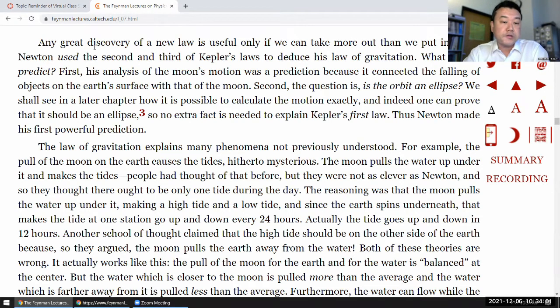And the way we judge scientific theories and laws is that if that's all you did, then it's not useful. Because all it has done is basically explain the things that exist, things that you already knew. So perhaps you gave some rationale for something that didn't have rationale. But how do you know your rationale reasoning is right? So this is Feynman demonstrating how Newton's discovery of the universal gravitation is useful in this way he described. Now, Newton used the second and third of Kepler's laws to deduce his law of gravitation. What did he predict? First, his analysis of the moon's motion was a prediction because it connected the falling of objects on the Earth's surface with that of the moon. Second, the question is, is the orbit an ellipse? We shall see in a later chapter how it is possible to calculate the motion exactly.